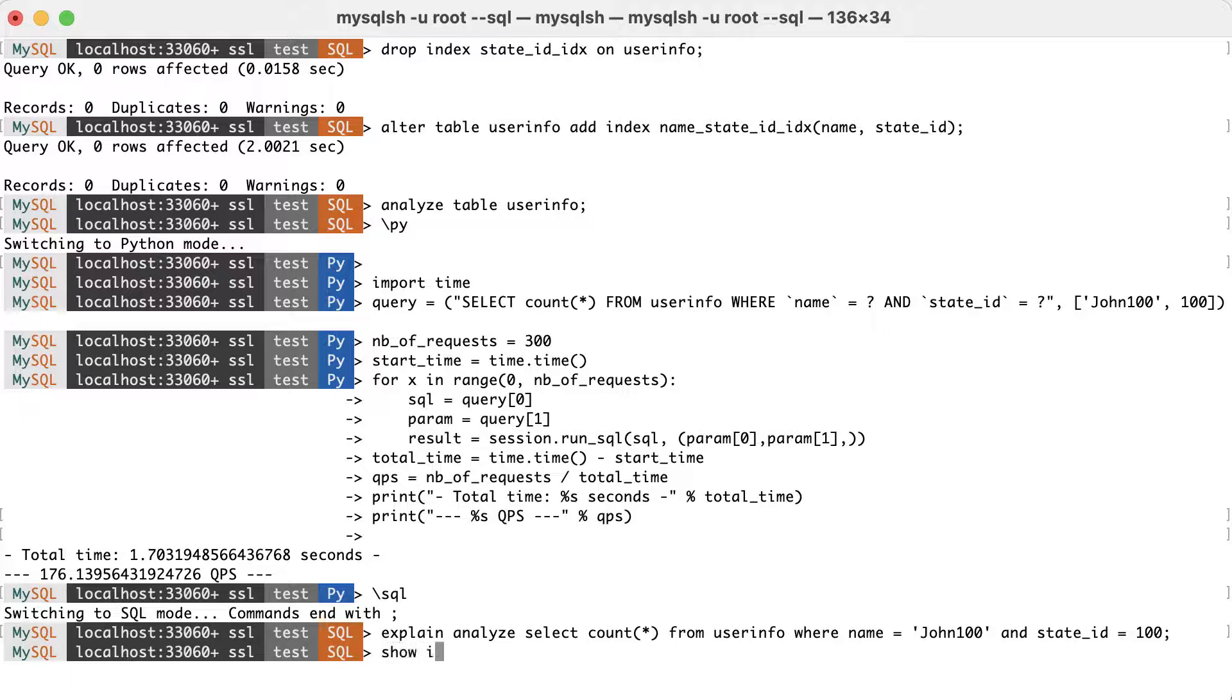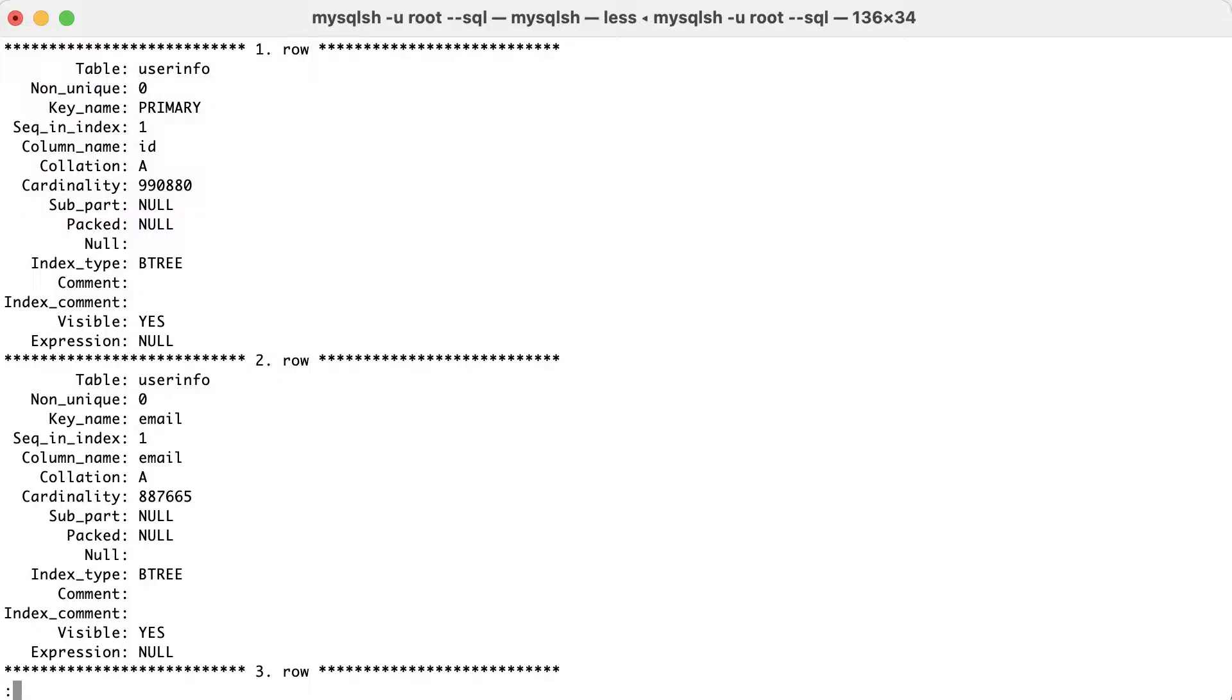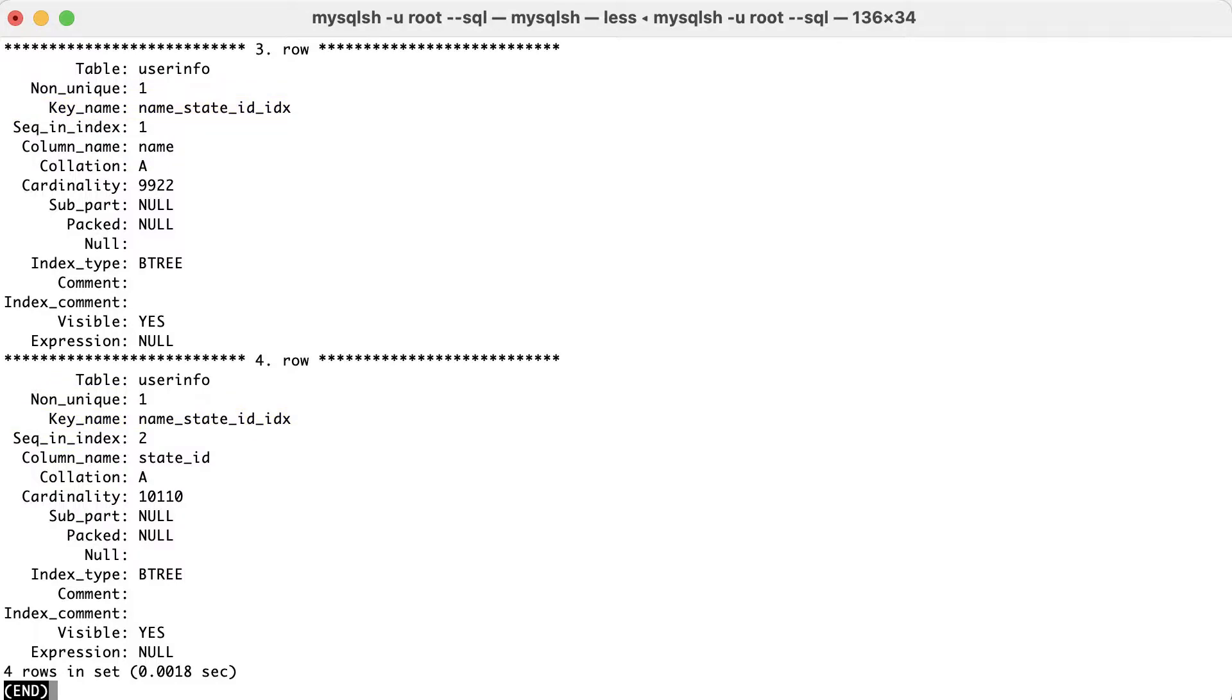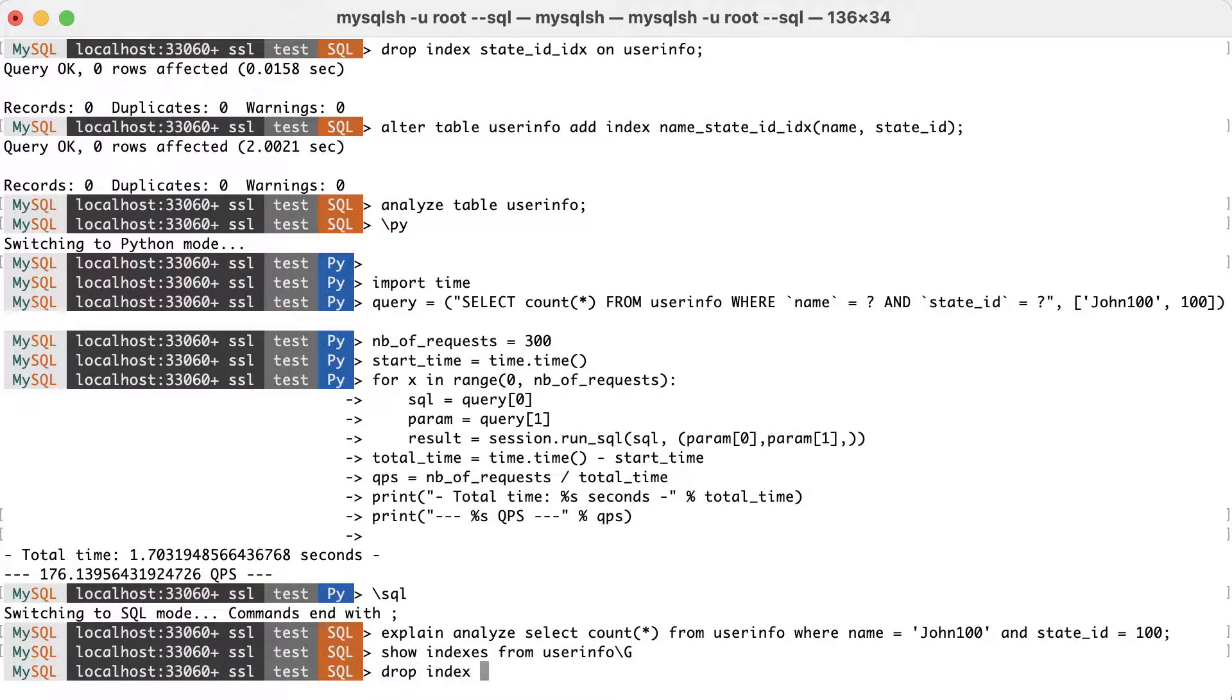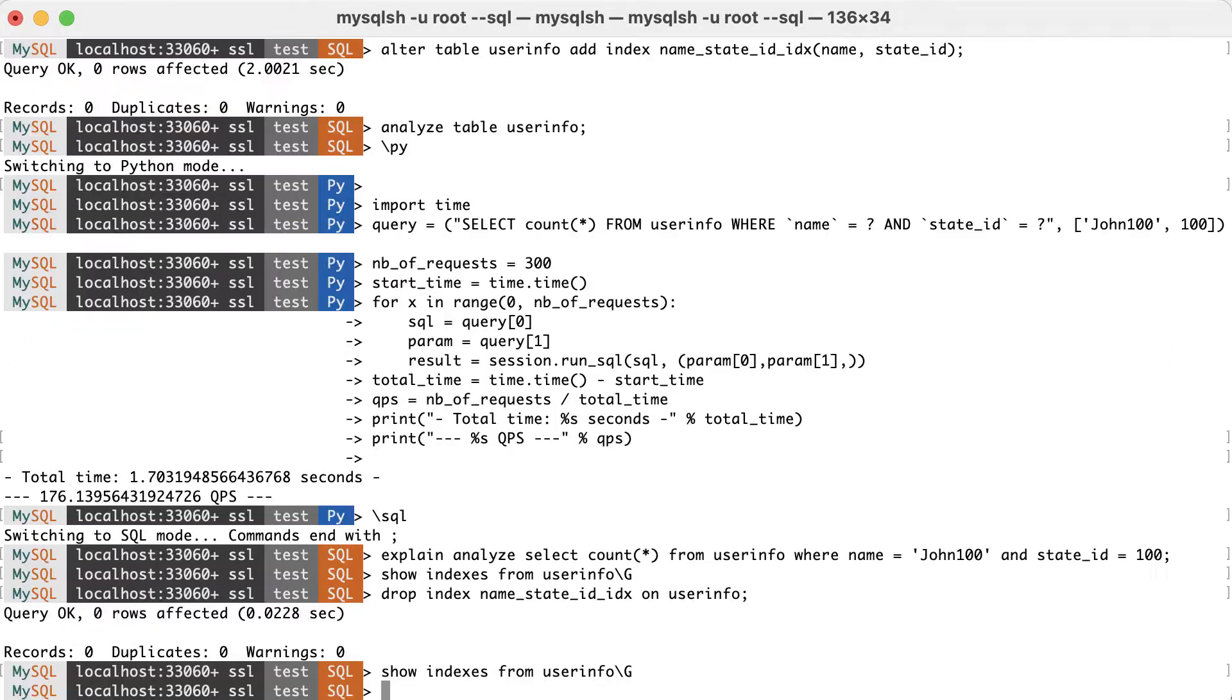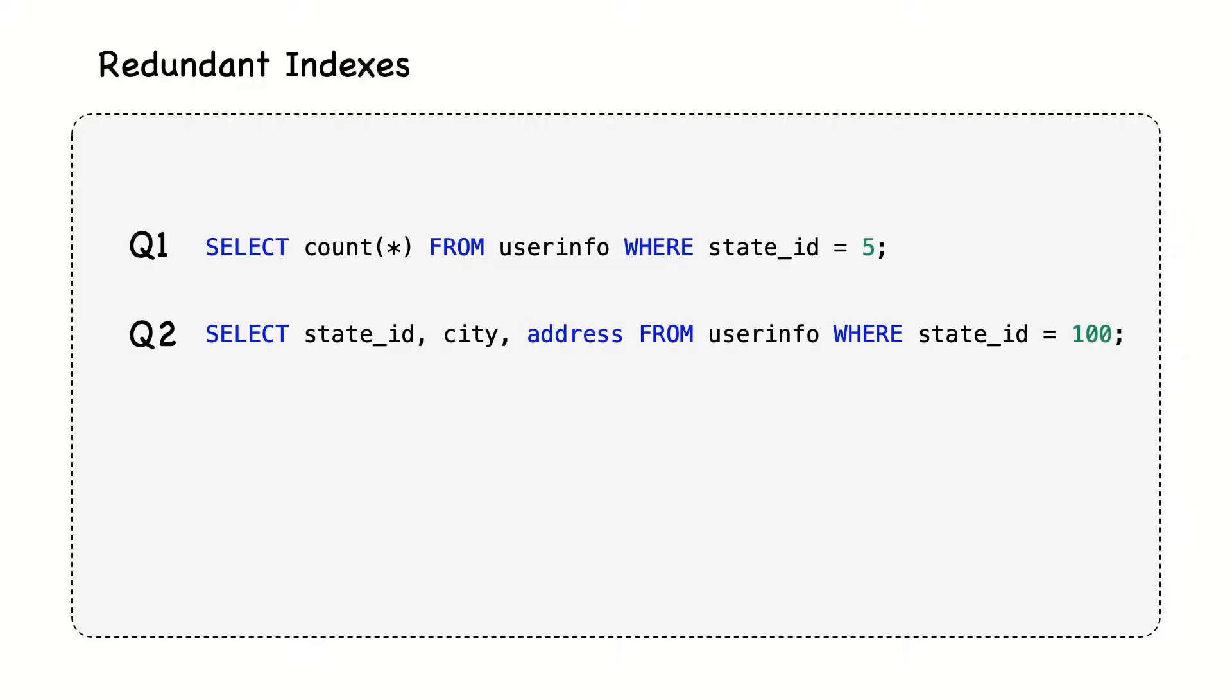First, we'll drop the current secondary index, then we will refer to the next two queries as Q1 and Q2. The first one retrieves the number of rows for a state ID, and the second retrieves several columns instead of just counting the rows. Now, if we look at these queries, then we might conclude that it would be useful to define an index on the state ID column. Otherwise, MySQL will do a full scan, which is quite slow, so an index might be really beneficial.